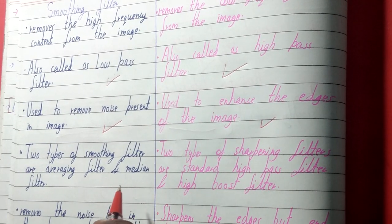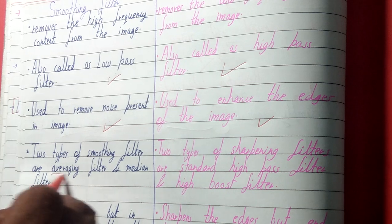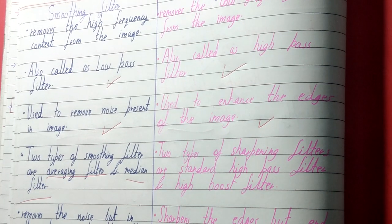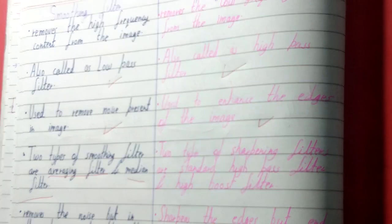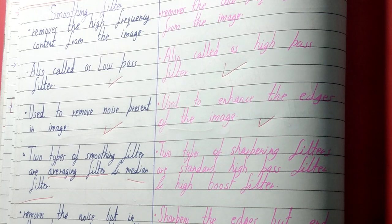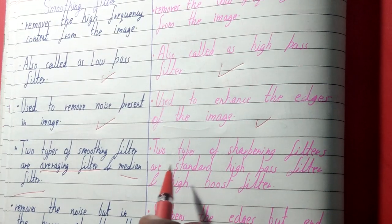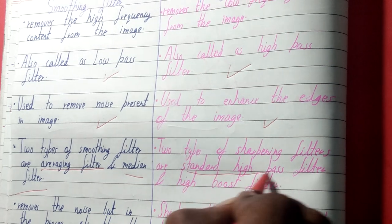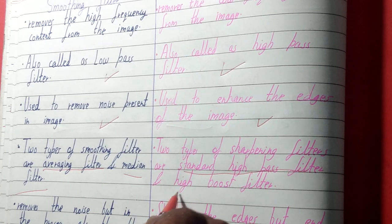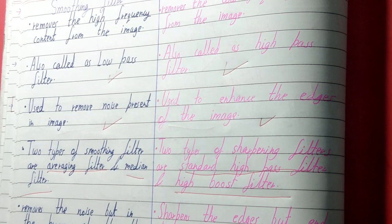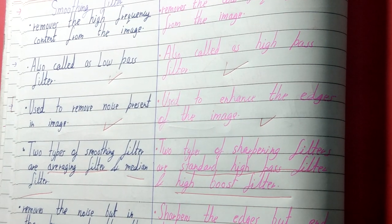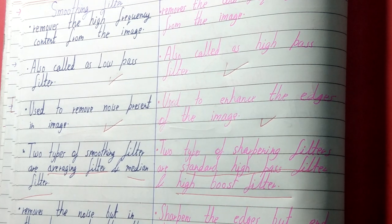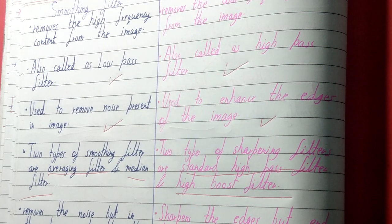The types of smoothing filter are: averaging filter and median filter. If you want to know more about these two filters, you can watch my previous videos. For sharpening filter, the two types are: standard high pass filter and high boost filter. I have made videos on all four filters.